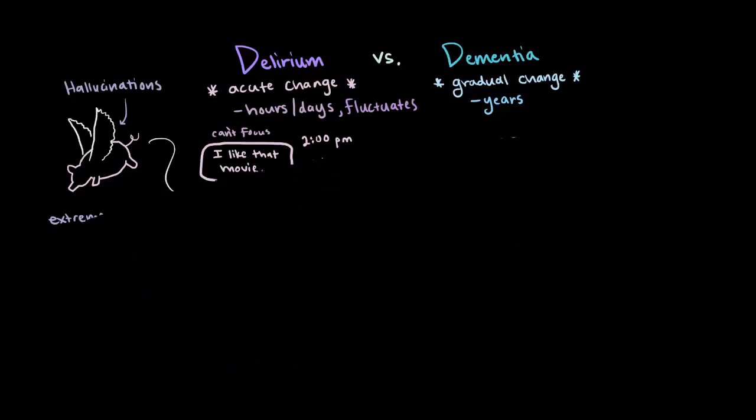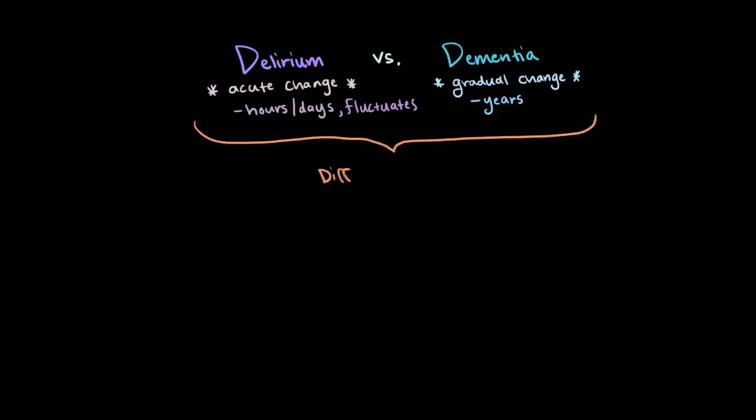And with that said, delirium and dementia are different disorders entirely. But because of the similarities in their symptoms, it can sometimes be really hard for doctors to distinguish between delirium and dementia, especially because delirium can even happen alongside dementia. So in order to tell the difference, there are a couple of important things that physicians will look for.